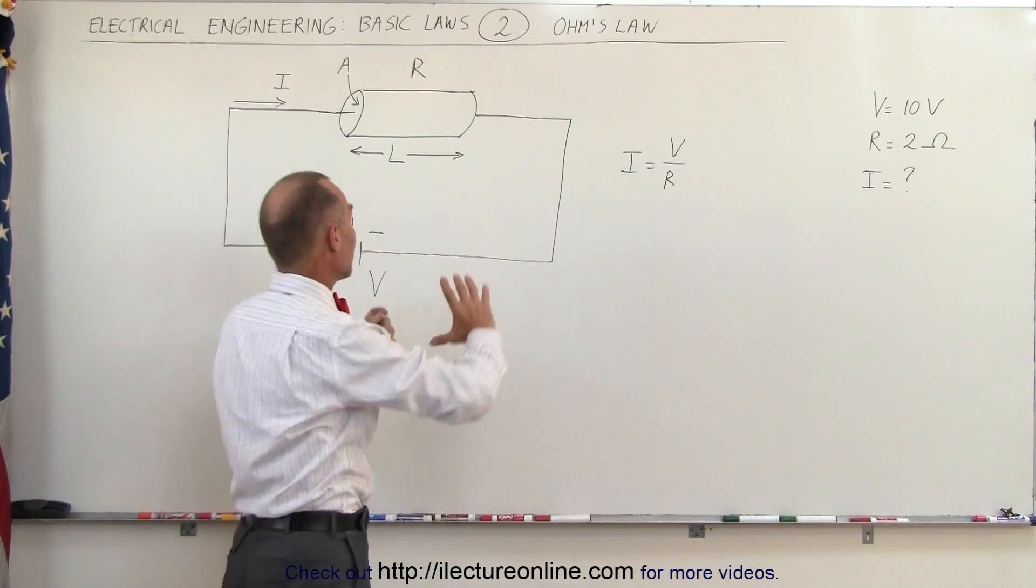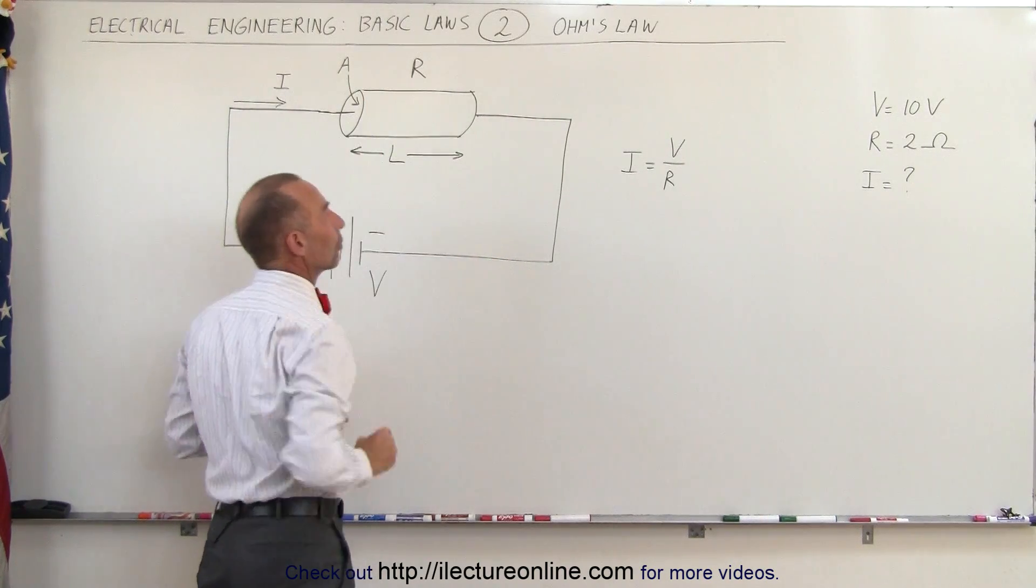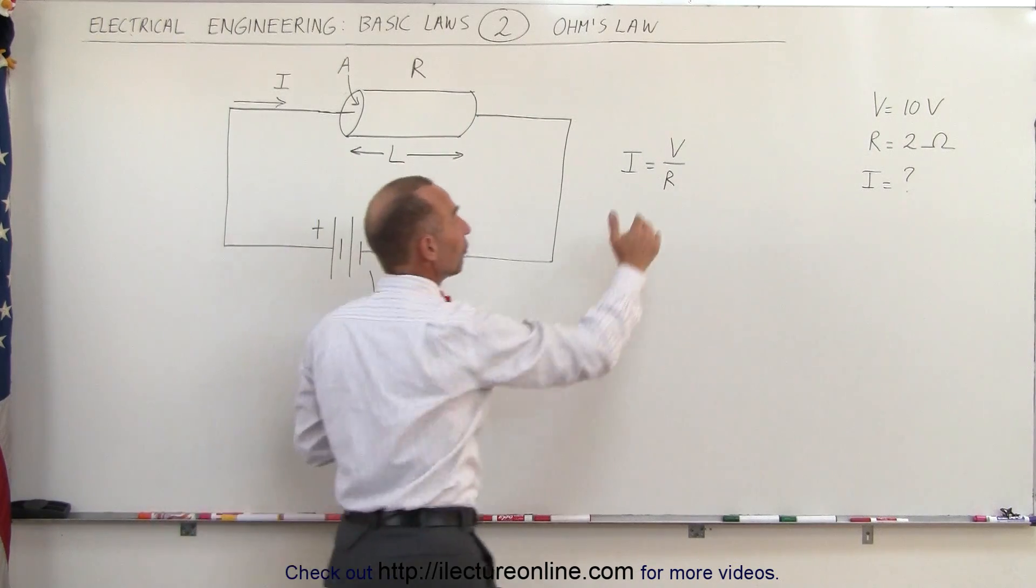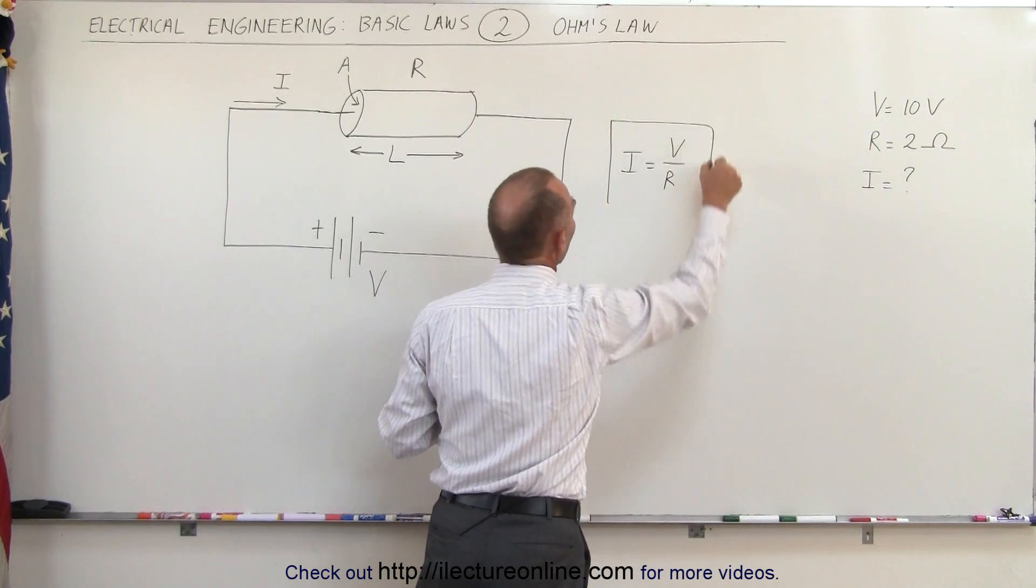It's basically a fight between the battery pushing current to the circuit and the resistance of the components trying to prevent that current from flowing. The ratio of voltage divided by the resistance equals the current, and this is known as Ohm's law.